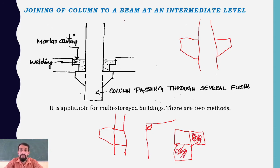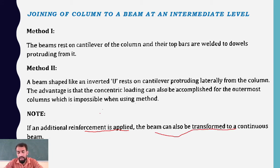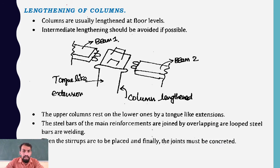If additional reinforcement is applied, the beam can also be converted into a continuous beam. By connecting the reinforcement, a simply supported beam can be made into a continuous beam — a simply supported beam turning into a continuous beam.